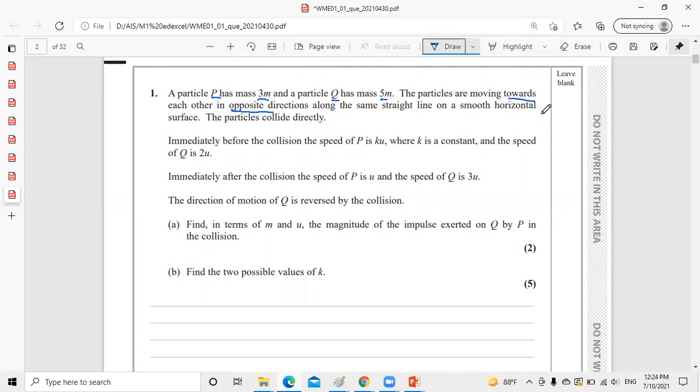If we have two particles P and Q with masses 3M and 5M moving in opposite directions, we set up a table with P and Q, the mass M, initial velocity U, final velocity V, and impulse. Let's put the information we have. Here we have 3M, here 5M. One is positive, let's say P is positive, and one is negative because they're moving in opposite directions.